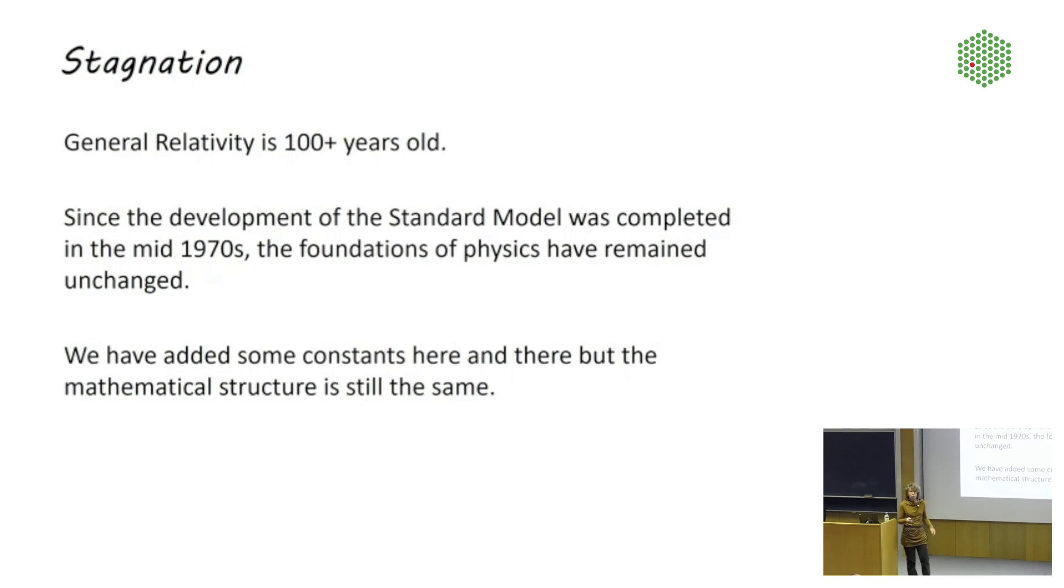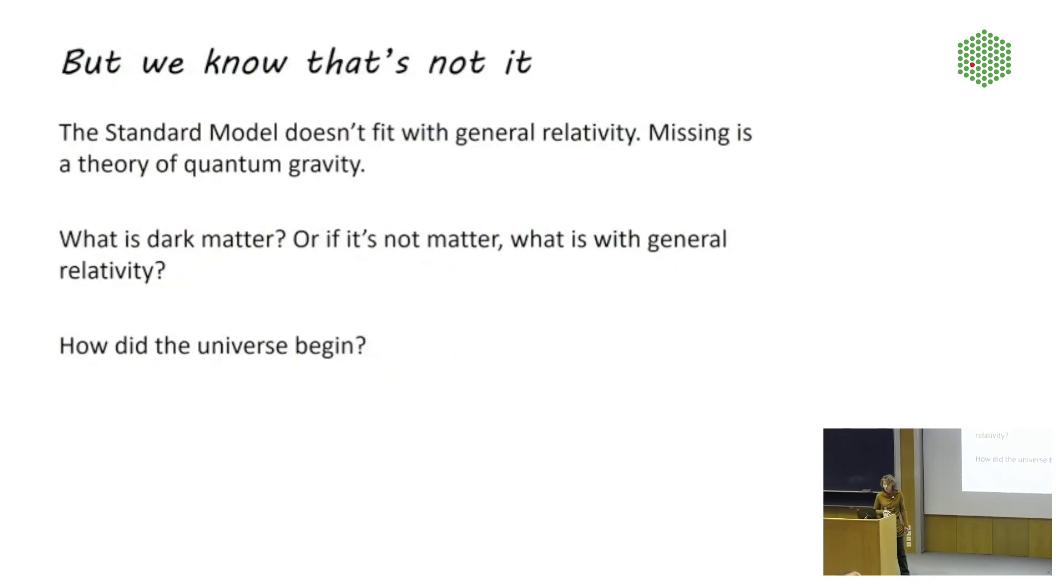To general relativity, we have added the so-called cosmological constant after astrophysicists noticed that the universe expands at an accelerating pace. But the cosmological constant was already introduced originally by Einstein. The point is that the theories by themselves for what the mathematics is concerned have not changed. But it's not like physicists are done and can just pack and go home. We know that that's not it. We have unsolved problems in the foundations of physics.